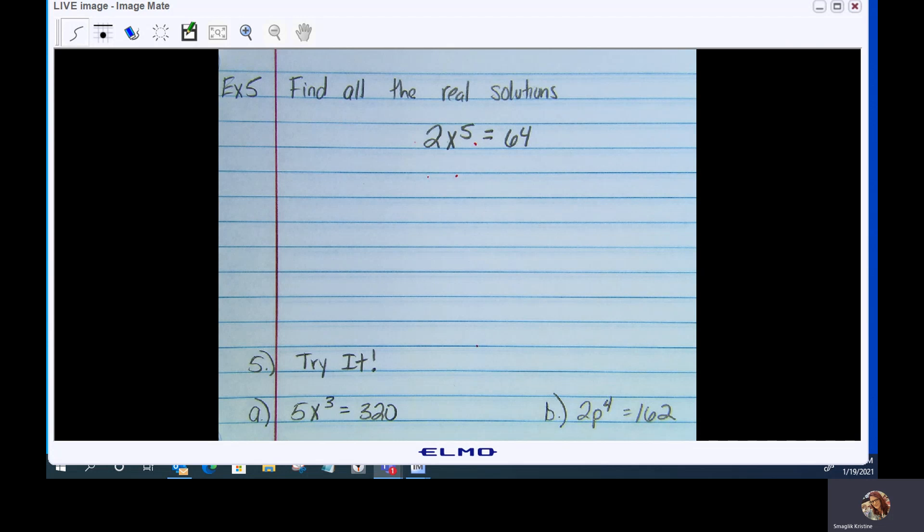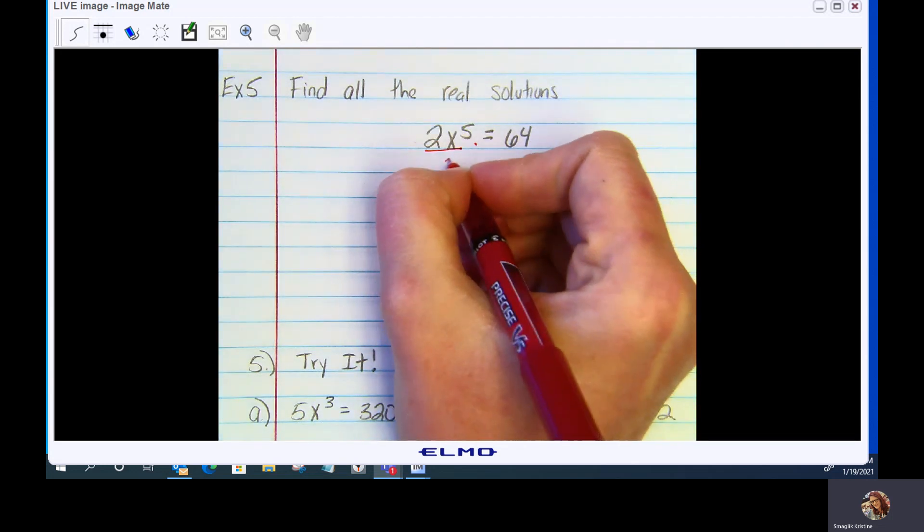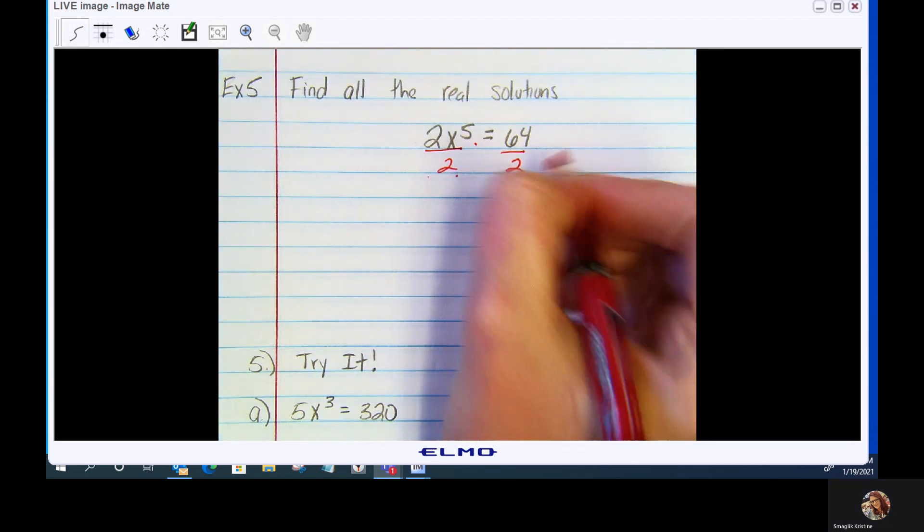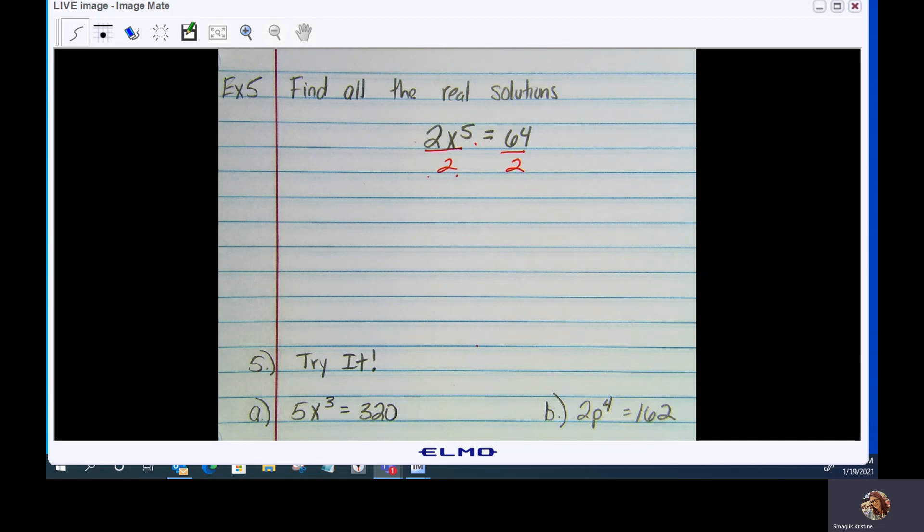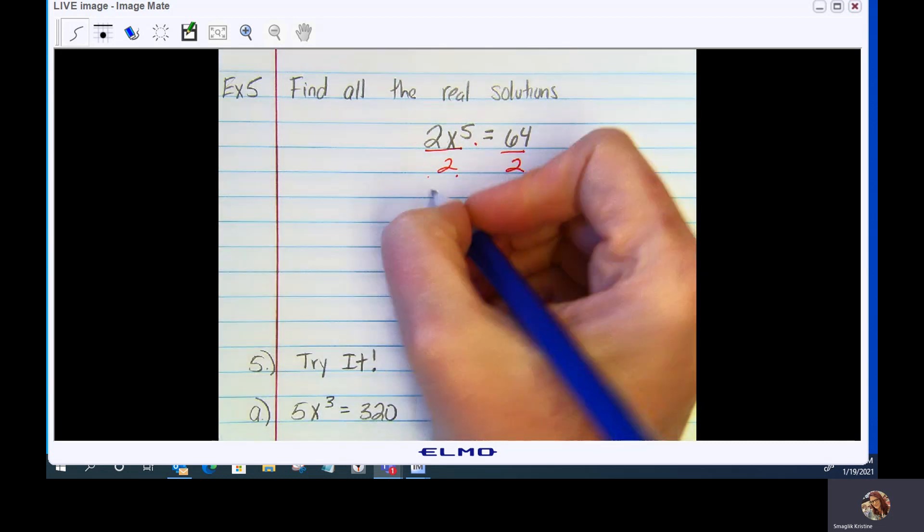We have 2x to the 5th equals 64. Again, you're trying to isolate the x. What we're going to do is divide both sides by 2. You now get x to the 5th equals 32.